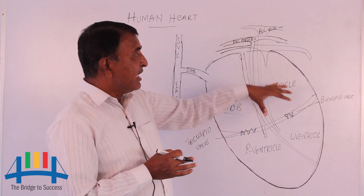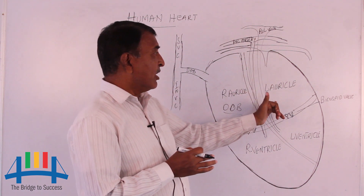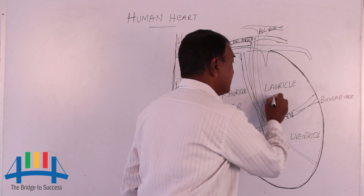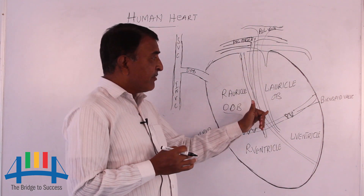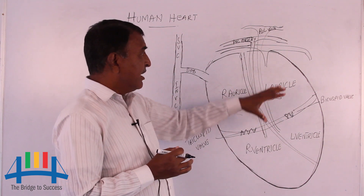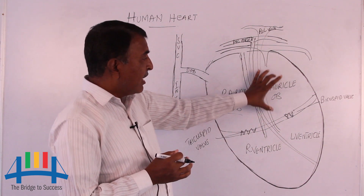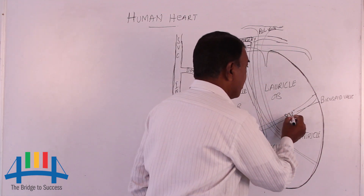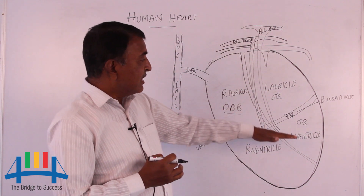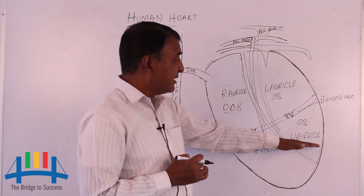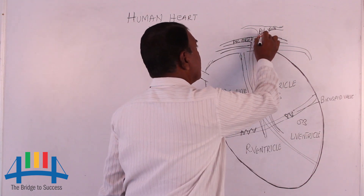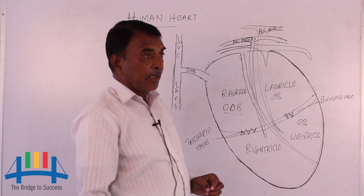From the lungs, the oxygenated blood enters into the left auricle. As soon as the left auricle receives the oxygenated blood, there are two types of contraction — first, auricle contraction, and second, ventricle contraction. When the auricles are contracting, through the bicuspid valve the oxygenated blood enters into the left ventricle. When the ventricles are contracting, through the pulmonary vein it is supplied to all parts of the body.